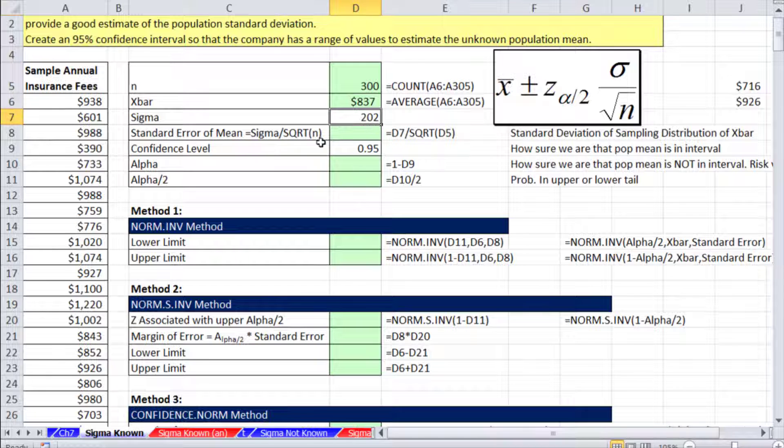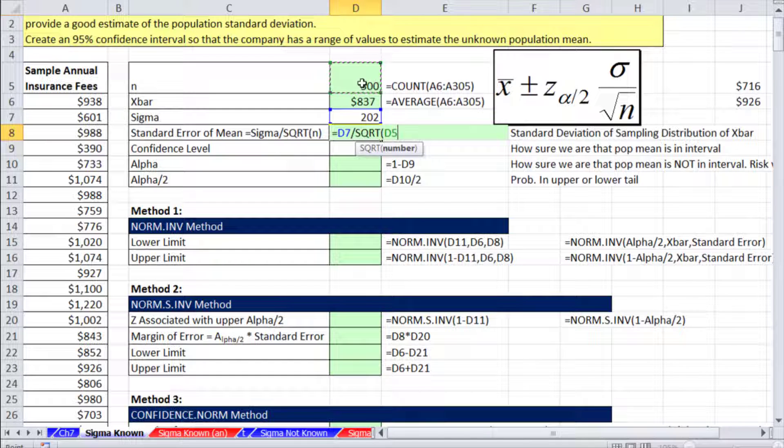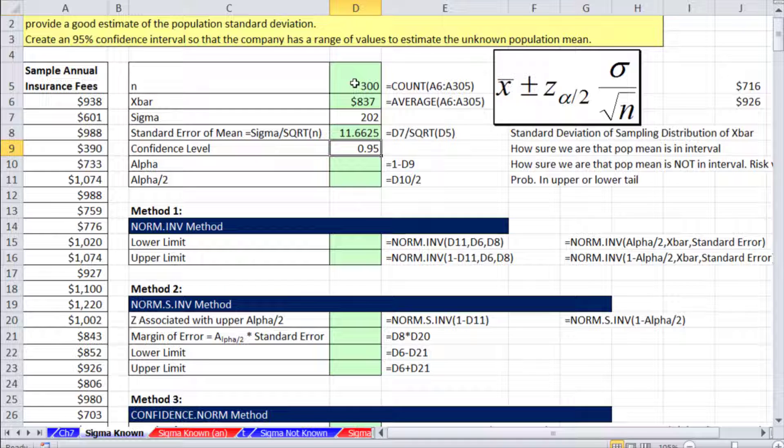Sigma is known. Now, the standard error: sigma divided by the square root of n. So there it is. The standard error, or the standard deviation of the distribution of sample means, 11.66.